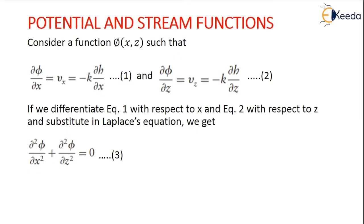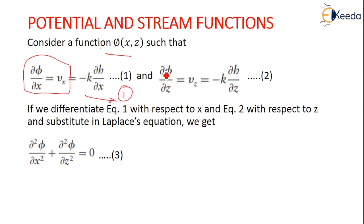Here we are considering a function phi of x and z such that dou phi by dou x is given as vx, and it is nothing but minus k into dh by dx — this is equation 1. Similarly, in the z direction, dou phi by dou z is the velocity in z direction equal to minus k into dou h by dou z. So if we differentiate equation 1 with respect to x, we have dou squared phi by dou x squared plus dou squared phi by dou z squared equal to 0.